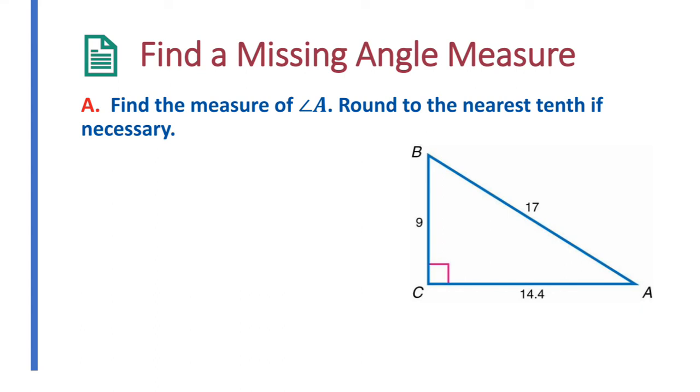So finding the missing angle measure. So it says find the measure of angle A, round to the nearest tenth if necessary. So we need to find this angle right here. So we're standing in this position. In this case, we're given this is the opposite, hypotenuse and adjacent. Since we have all three of these, we could use any ratio. So I'm just going to choose sine, because I want to do sine.